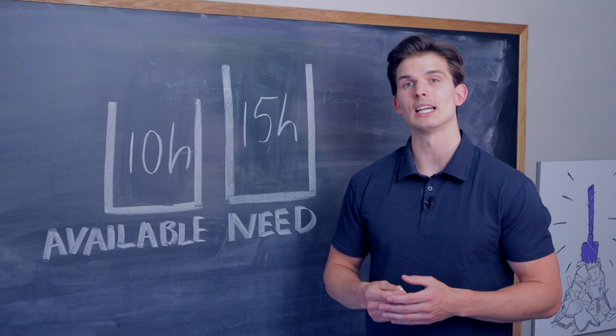If you're creating a reading task, Shovel will automatically calculate the time you need to complete it by multiplying the time per page of the reading source by the number of pages you have to read.